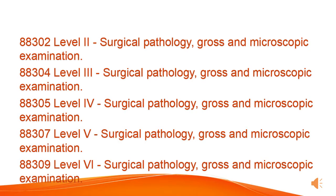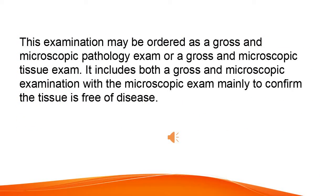Level II, Surgical Pathology, Gross and Microscopic Examination, 88304. Level III, Surgical Pathology, Gross and Microscopic Examination, 88305. Level IV, Surgical Pathology, Gross and Microscopic Examination, 88307. Level V, Surgical Pathology, Gross and Microscopic Examination, 88309. Level VI, Surgical Pathology, Gross and Microscopic Examination. This examination may be ordered as a gross and microscopic pathology exam or a gross and microscopic tissue exam. It includes both a gross and microscopic examination, with the microscopic exam mainly to confirm the tissue is free of disease.